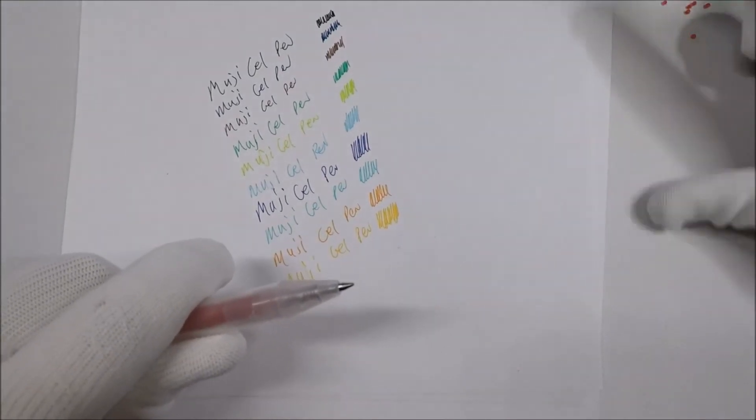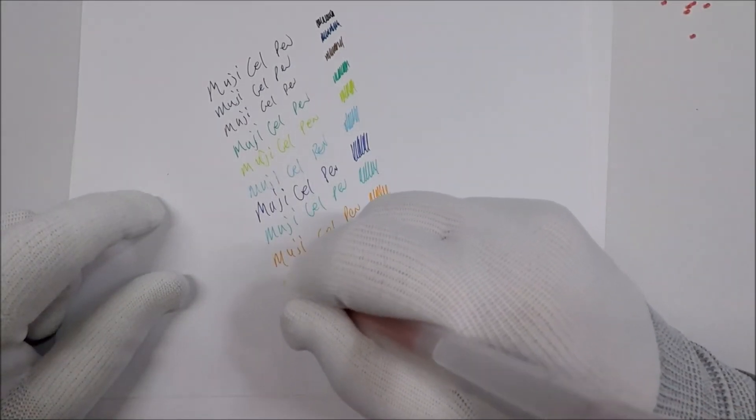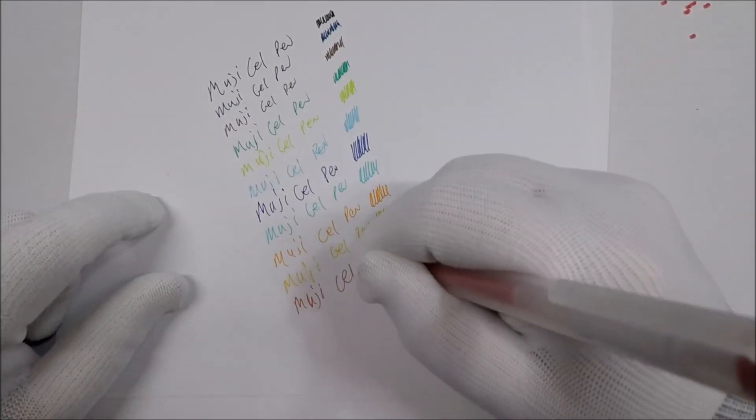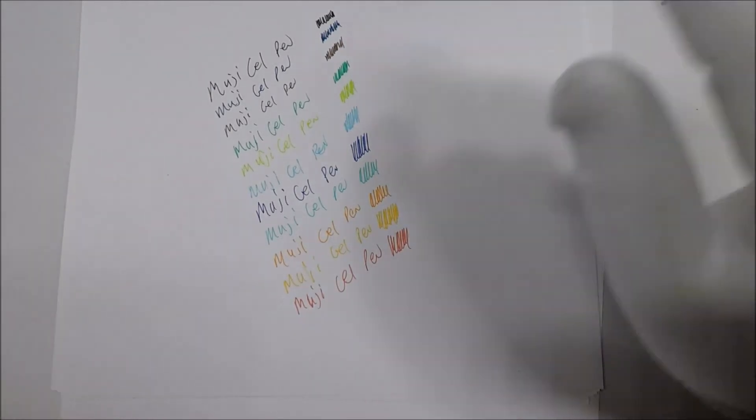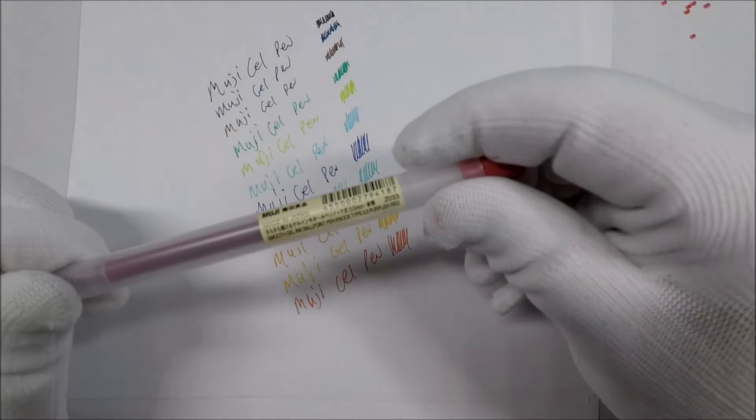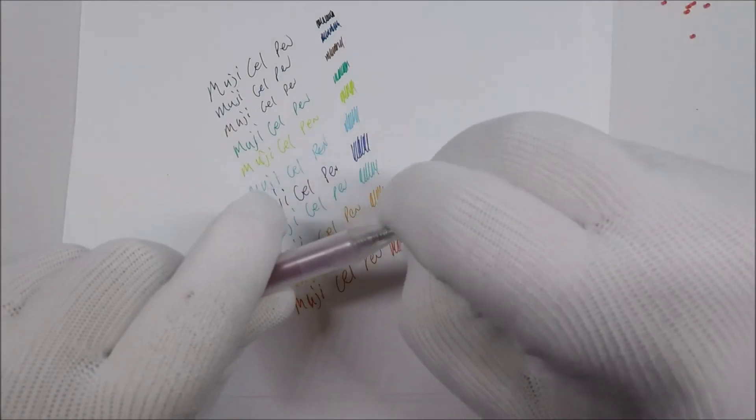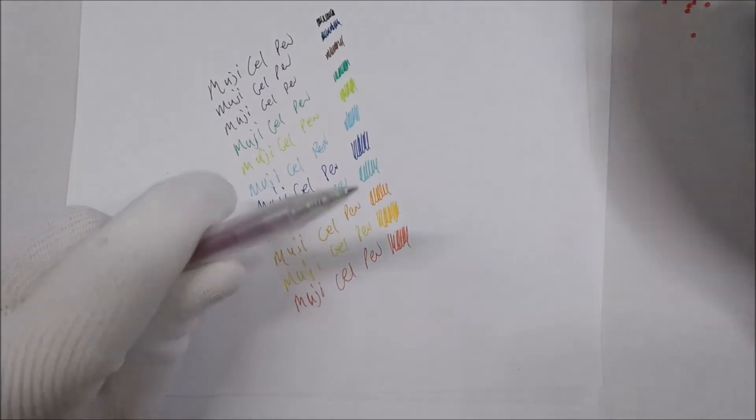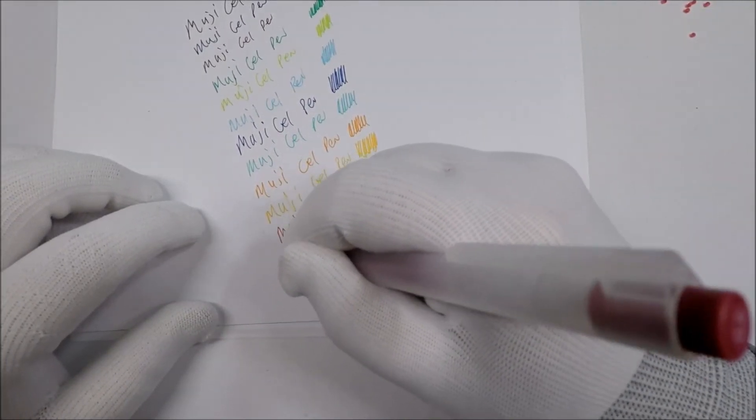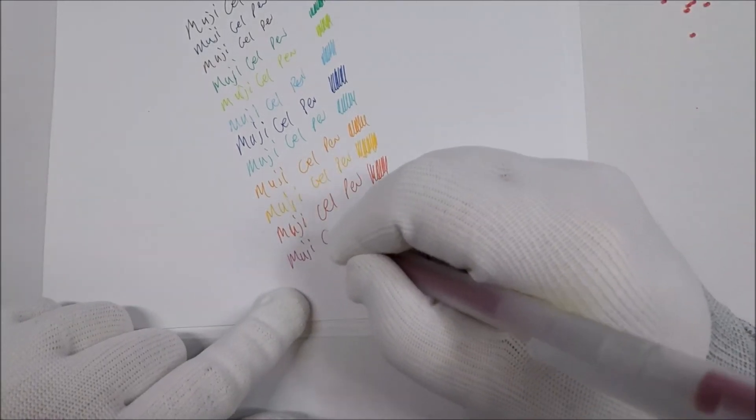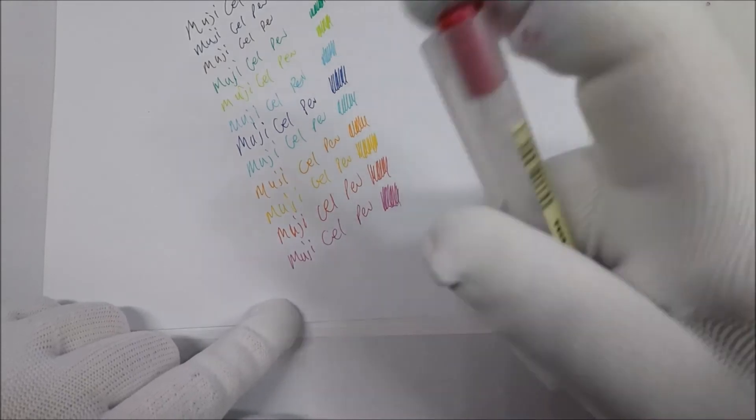Here's a red one. Muji gel pen. Red doesn't look too bad. So we got red and then we got purplish red, and I'm just reading these off the actual pens. Muji, that's kind of a cool color. Gel pen. That one is not too bad.